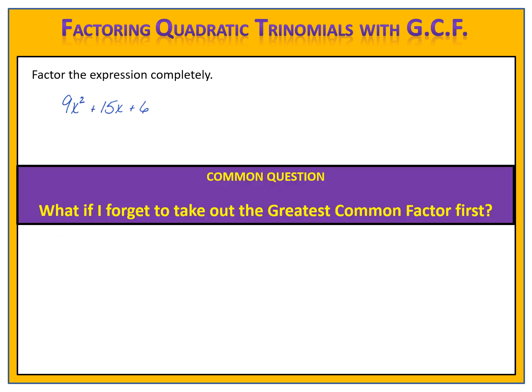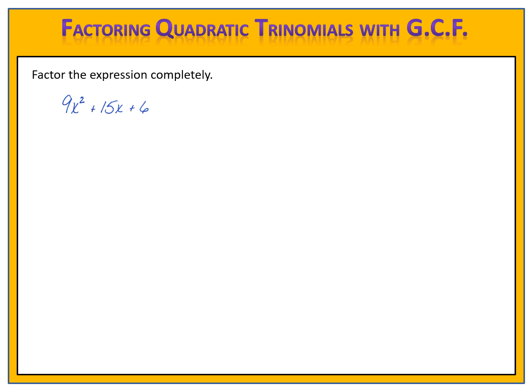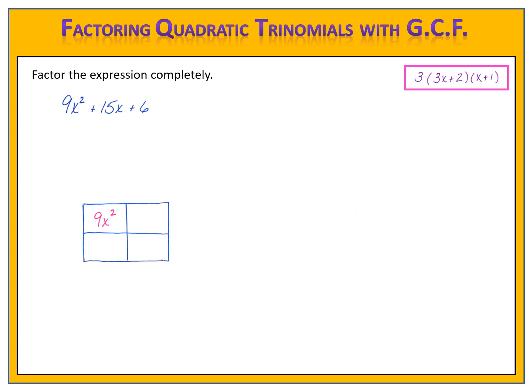A common question I'm often asked is: what if I forget to take out the greatest common factor first? Let's take a look. If we take 9x squared plus 15x plus 6 without factoring out the 3 first, we begin by drawing the grid. We put 9x squared and plus 6 inside the grid. Then we find the numbers for the other spots: 9 times 6 is 54, so we need numbers that multiply to 54, and the number in the middle is 15, so we need numbers that add to 15.